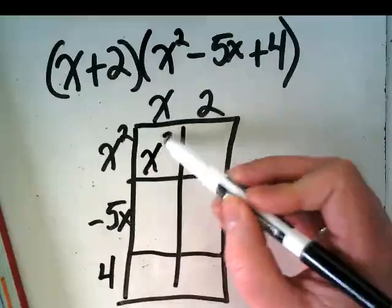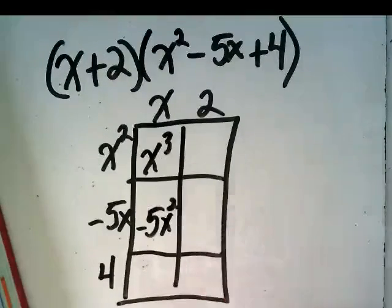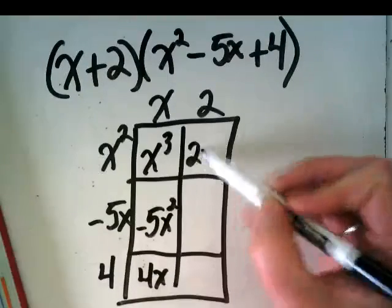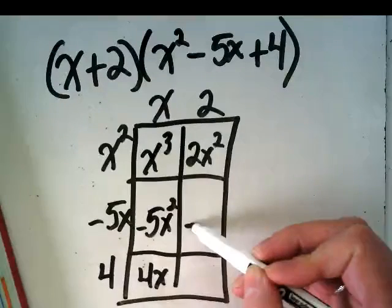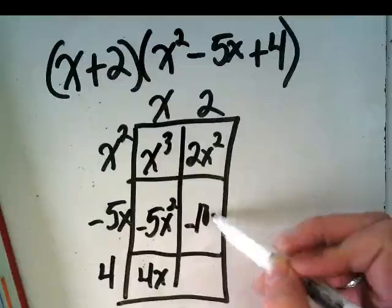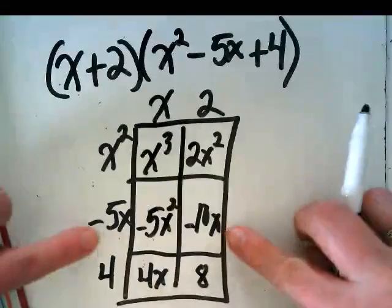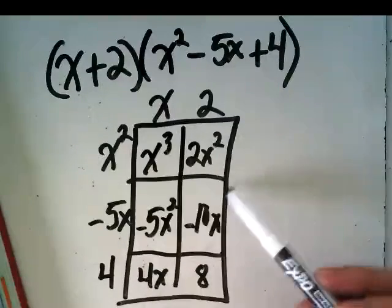x³, negative 5x², 4x, 2x², negative 10x, 8. Yeah, this is not a 10x², because there's no x up here. Notice again, like terms are diagonal.